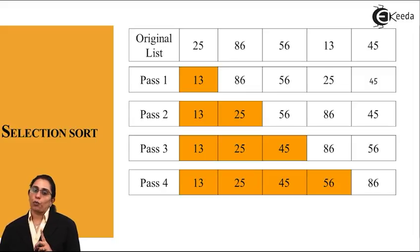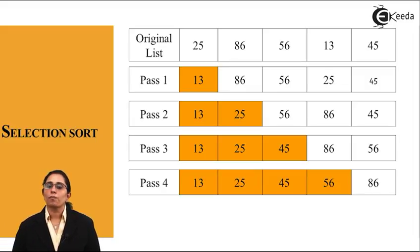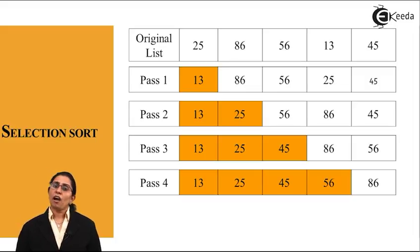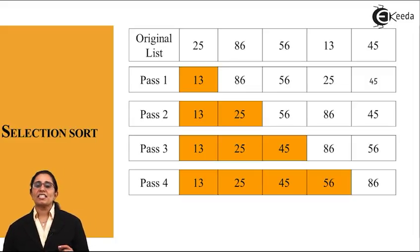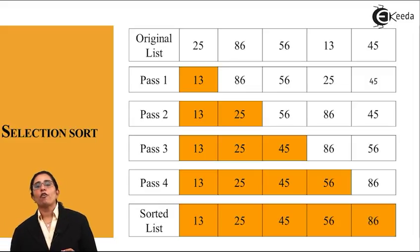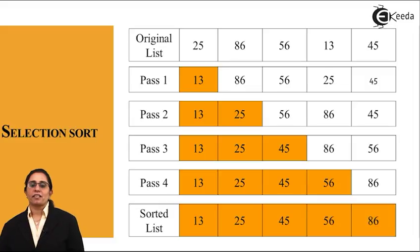Pass 3 output becomes input to pass 4. The list is 13, 25, 45, 56 and 86. We see as we had 5 elements in the list, after 4 passes, my complete list is sorted. I have been able to arrange all my numbers from smallest to largest in a sorted manner. The sorted list is 13, 25, 45, 56 and 86. The total number of passes required are 4.